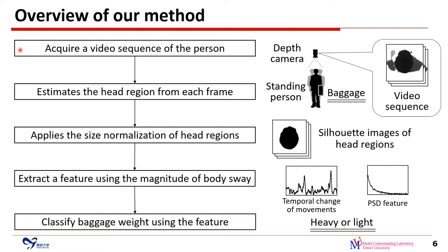We acquire a video sequence of the standing person using an overhead camera. Our method estimates the head region from each frame of the video sequence, and applies size normalization of the head region to represent the silhouette of the head. We extract a feature for baggage weight classification using the magnitude of body sway computed from a video sequence of normalized silhouette images. Finally, we classify baggage weight using these features.